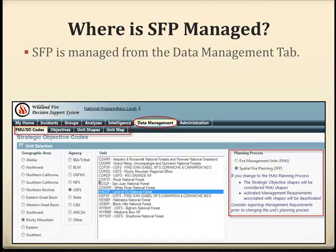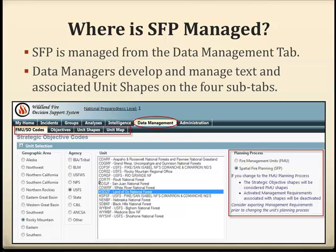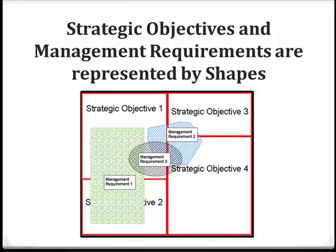Spatial fire planning is managed from the data management tab in WFDIS. From here, data managers develop and manage text and associated unit shapes on the four sub-tabs, as displayed in this graphic. With spatial fire planning, strategic objectives and management requirements are represented by shapes. In this example, you can see four strategic objective shapes and three management requirement shapes.